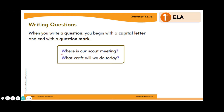So our two examples down here: Where is our scout meeting? What craft will we do today? You can tell those are questions because of the question mark at the end. And these two examples begin with a question word — where and what. Always be sure that you begin your question sentences with a capital letter.